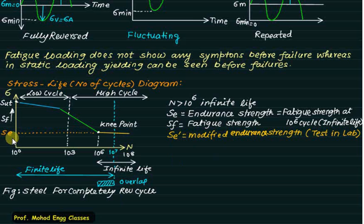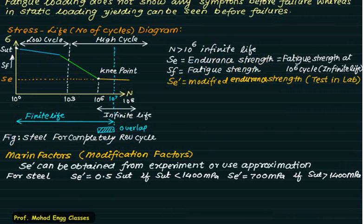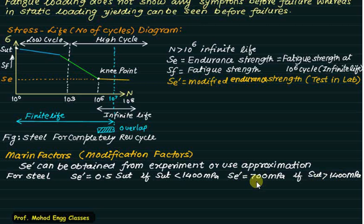The value SE' is obtained from standard laboratory tests, but actual conditions involve various loading types, temperature factors, and surface finishes. So SE' is modified using the Marin equation, giving the modified endurance strength SE. For steel, SE' equals 0.5 × SUT when SUT is less than 1400 MPa, and SE' equals 700 when SUT is greater than 1400 MPa.